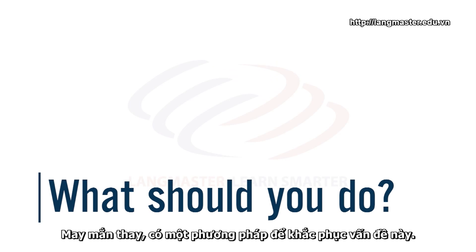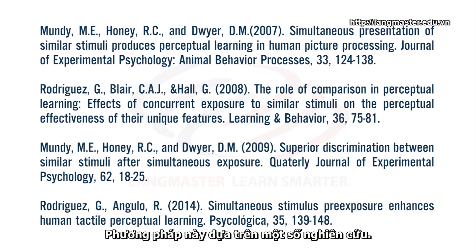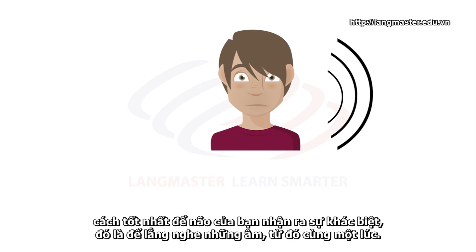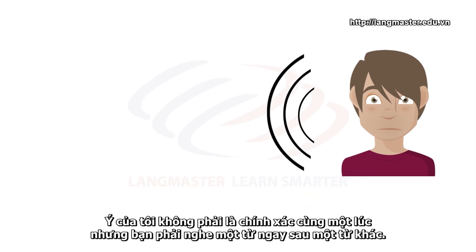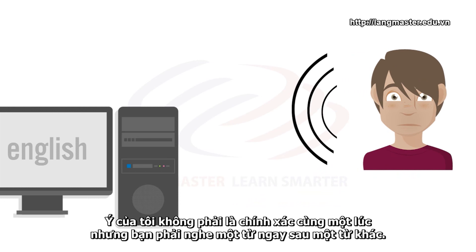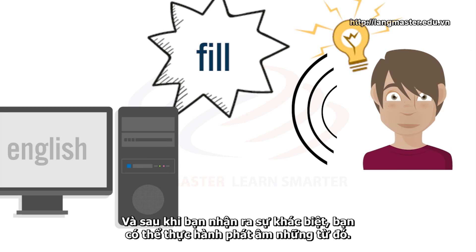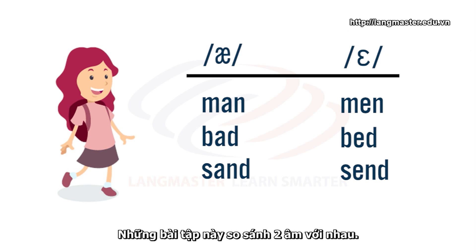So what should you do? Fortunately, there's a method for overcoming this problem. This method is based on a number of research studies. These studies suggest that if you have trouble differentiating between two sounds or two words, the best way to train your brain to recognize the difference is to listen to the words at the same time — not exactly at the same time, but you listen to one word immediately after the other. If you hear those words together, you are more likely to notice the difference, and after you've noticed the difference, you can then practice pronouncing those words. There are many free pronunciation exercises that apply this idea.